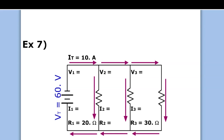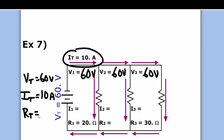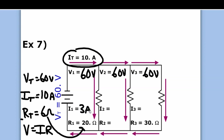This is a parallel circuit because there's branching. The reference table tells me all branch voltages are equal — VT equals 60 volts. IT equals 10 amps, so RT equals 6 ohms by Ohm's law, because 6 times 10 is 60. The total is less than every resistor — it always is. Using the crossword puzzle approach: I1 equals 3 amps because 3 times 20 is 60. I3 equals 2 amps because 2 times 30 is 60.